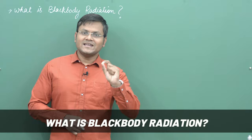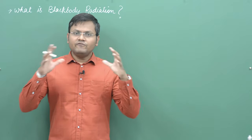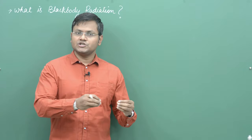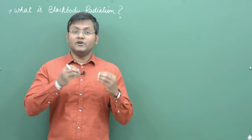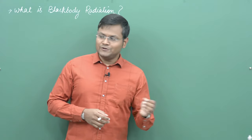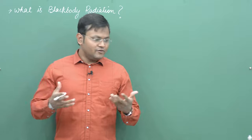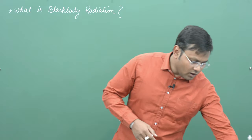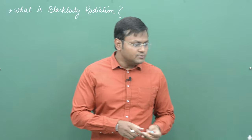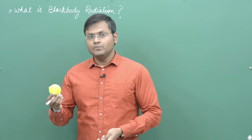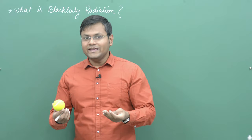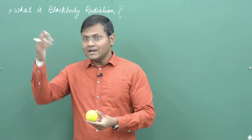First of all let us try to understand what blackbody radiation is. Everything around us — all the objects — are emitting thermal radiation by virtue of their temperature, by virtue of the heat contained in them. Now you might ask: I don't really see objects glowing automatically. For example, a piece of chalk that is blue in color, another that is orange, or a ball that is yellow — if I switch off all the lights I cannot see them; they are only reflecting the light that is falling on them.